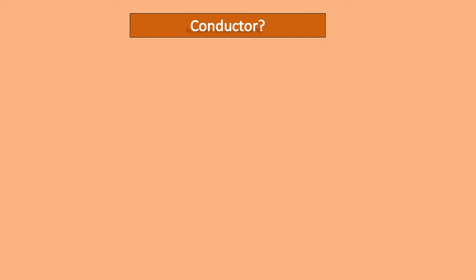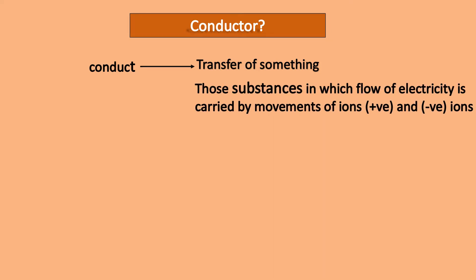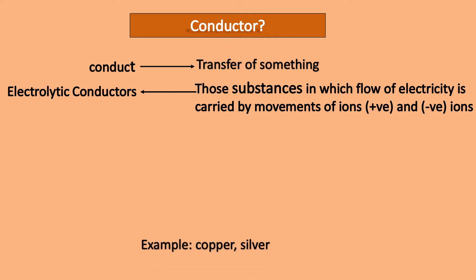You must have come across the word conductor. What do you understand by the word conduct? It basically means transfer of something. So materials that transfer something through themselves are known as a conductor, and those substances in which flow of electricity is carried by the movement of positive ions and negative ions are known as an electrolytic conductor. For example, metals like copper, silver, etc.